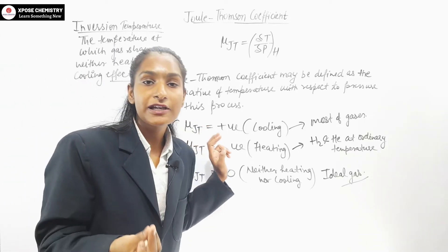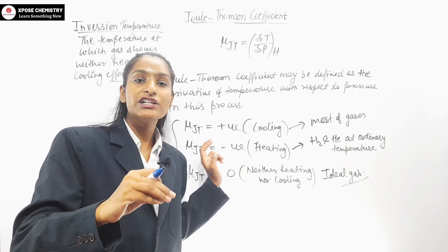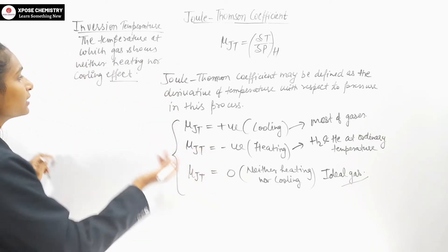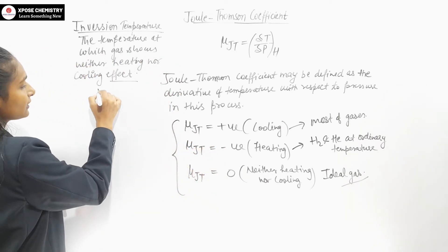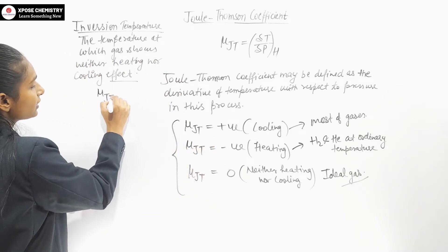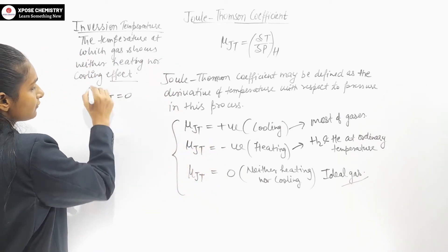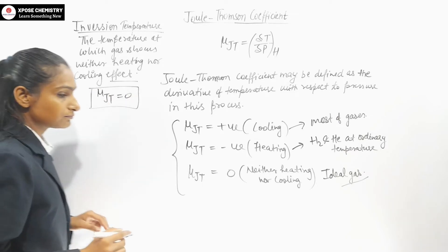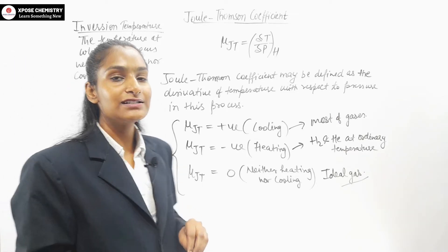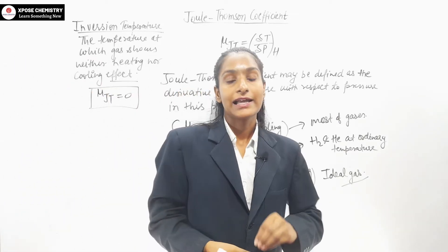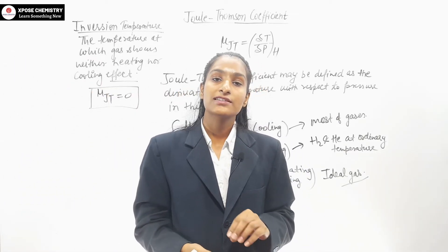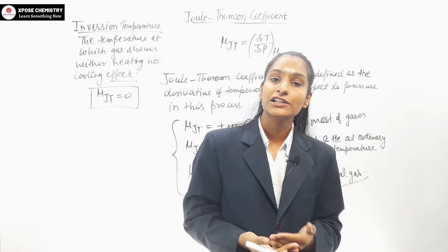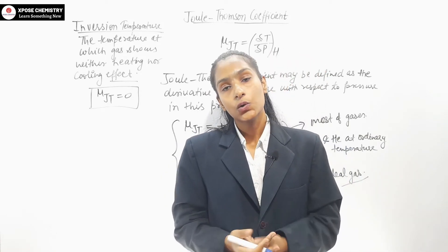Ultimately, what does it mean? At the inversion temperature, μJT is equal to zero — there is neither cooling nor heating. This is such a temperature at which the gas neither heats nor cools.